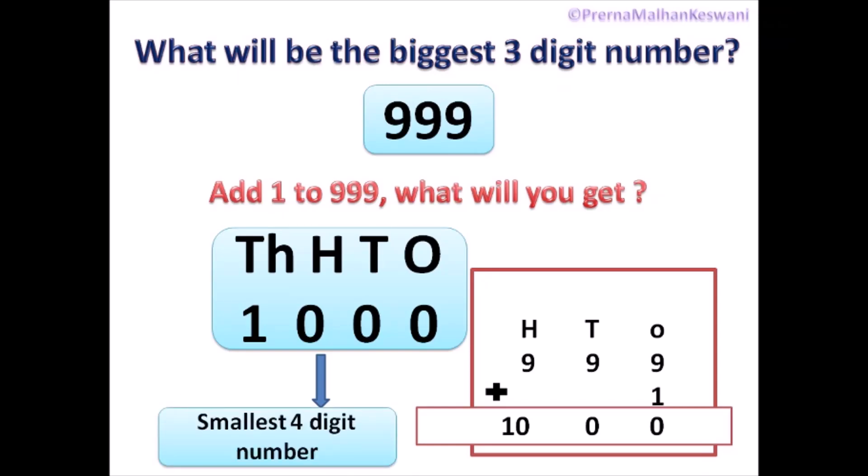And here, to HTO, one more place is added — that is thousands. So under 1s, it is 0. Under 10s, it is 0. Under 100s, it is 0. And under 1000s, it is 1. So we will be starting with 1,000. These four-digit numbers start with 1,000, so 1,000 is the smallest four-digit number.